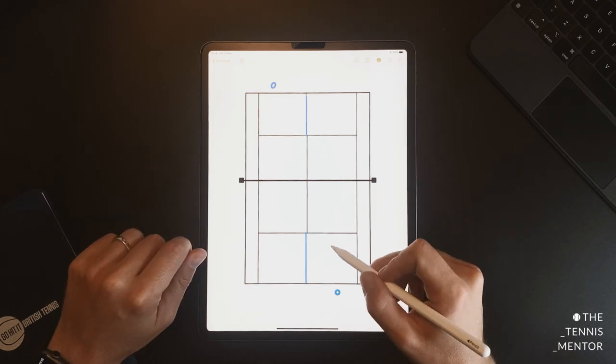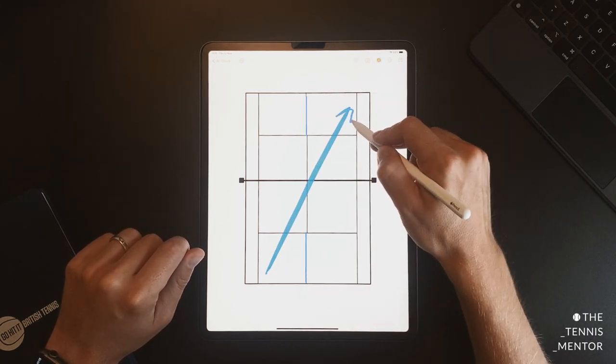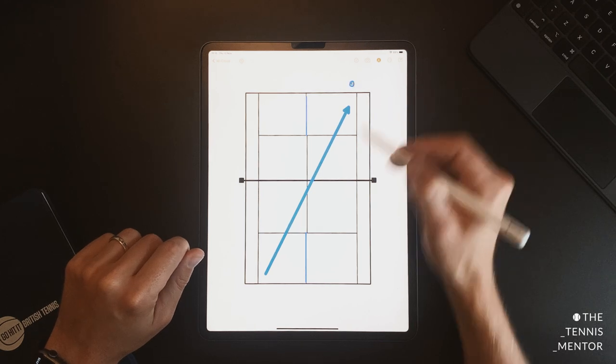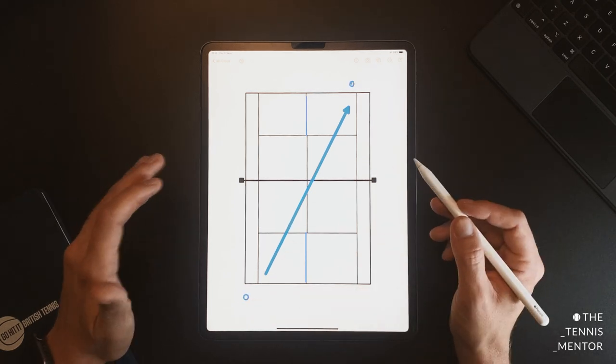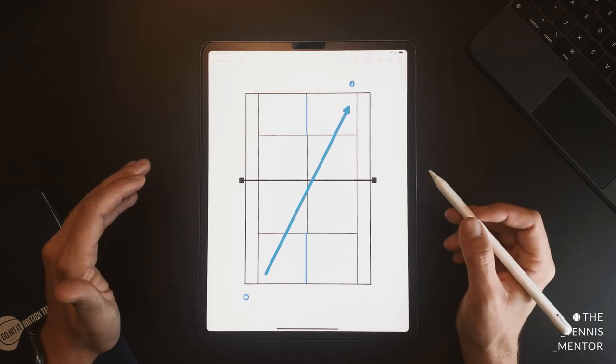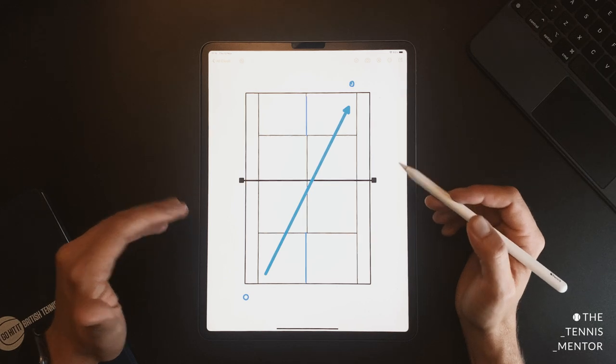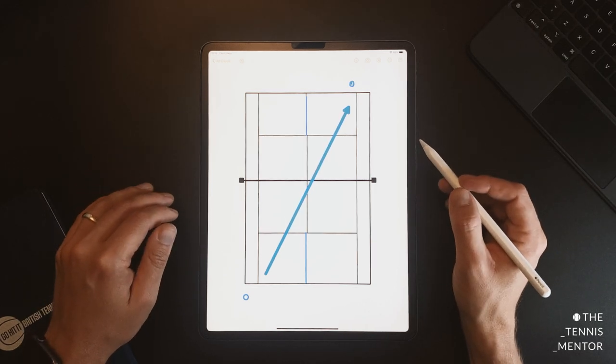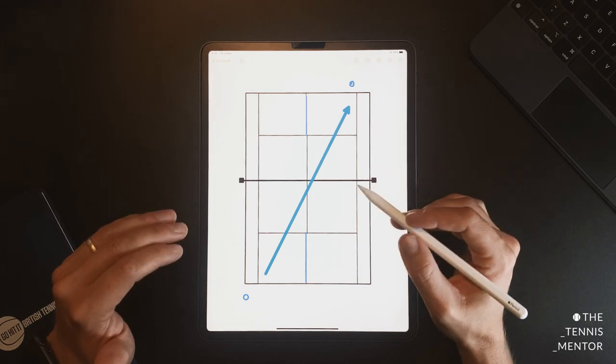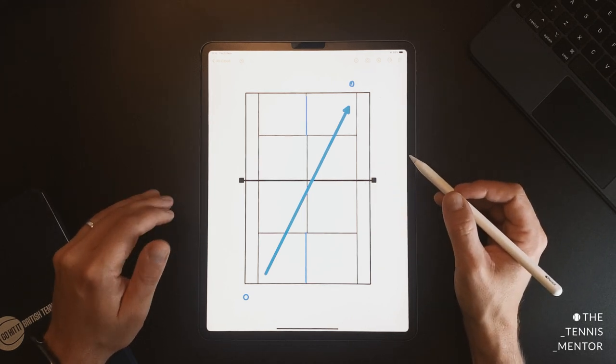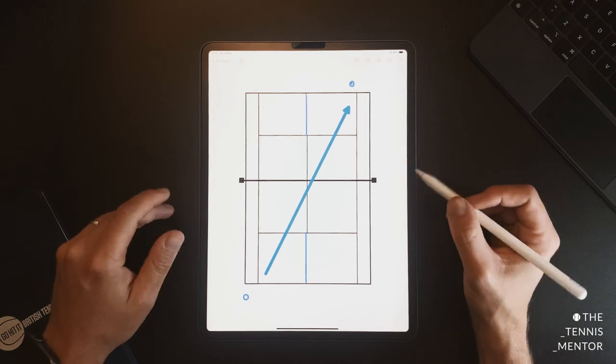This drill can obviously be done on the opposite diagonal too. So you can play on this side with two players on the left-hand side of the court. You can practice specific shots. You could set the challenge where if you're playing on this side and you're right-handed that you're only allowed to hit forehands to practice your inside-out shots. You could set the rule that you can only slice when it comes to your backhand. There are endless ways that you can progress or regress this drill to set it at the right challenge level and to work on what you want to get from it.